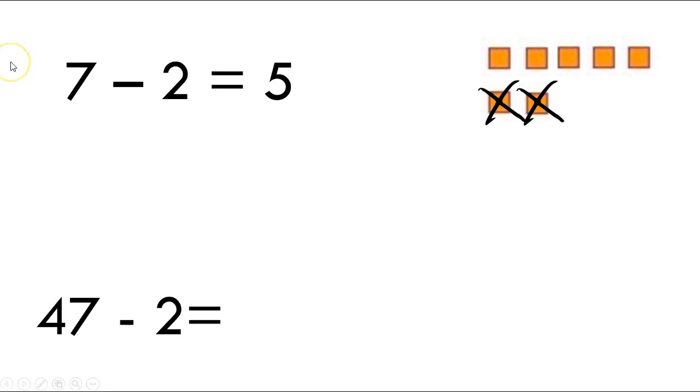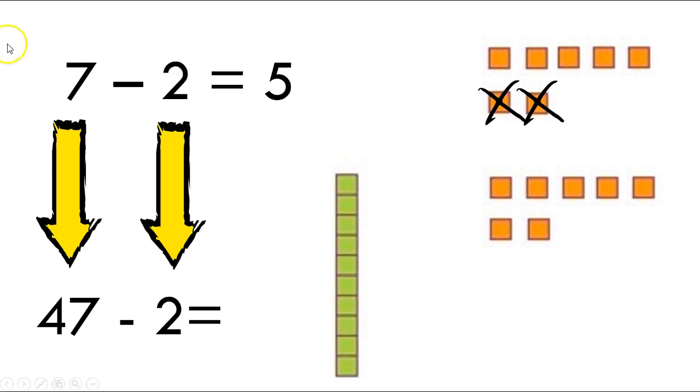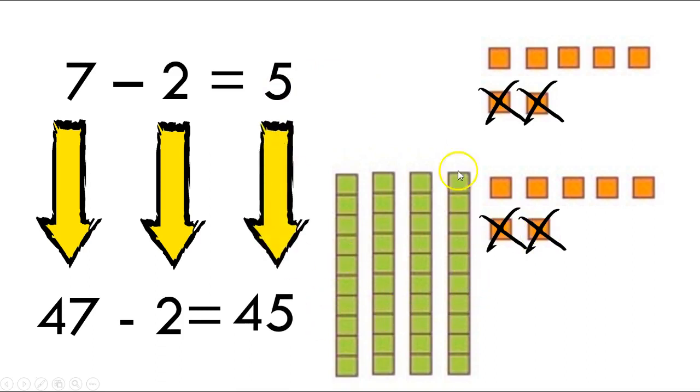So now what if we have 47 minus 2? Our 7s are lined up again, and our 2s are lined up again. Let's get our 7 ones here because we've got 47. And we need 4 tens. And we're taking away how many ones? We're taking away 2. Now, all we have to do is drop down our 5 and add our tens. So we got 45.